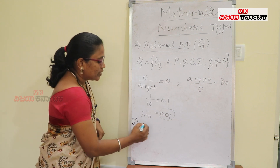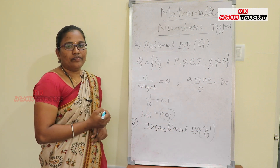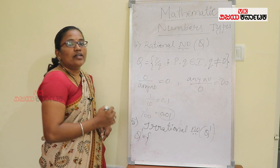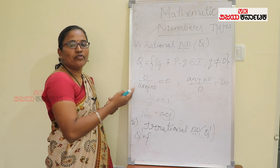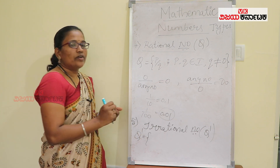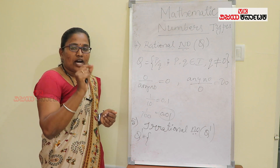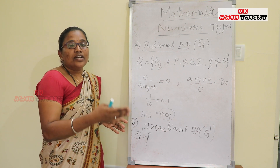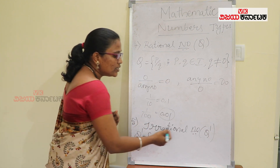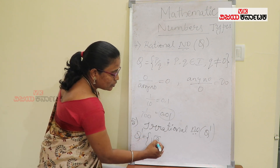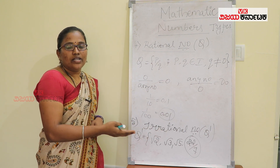Coming to the next number: irrational numbers, represented as Q prime. What is an irrational number? Numbers which cannot be expressed as rational — that is called irrational. A number that cannot be explained in p by q form is called irrational. Actually, if you divide one number by another and the decimal digits do not end — that is, terminating decimals are not obtained — those are called non-terminating decimal fractions, which are irrational numbers. Examples include root 2, root 3, root 5, and 22 by 7, which gives non-terminating decimal values.